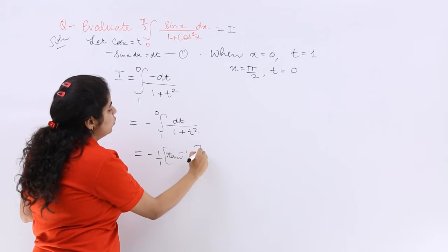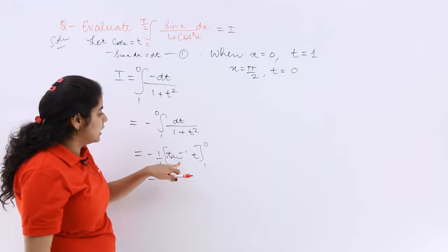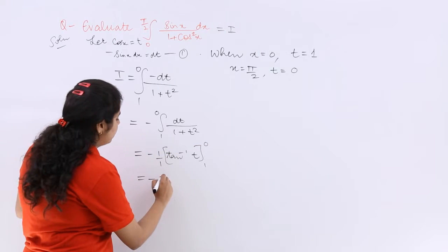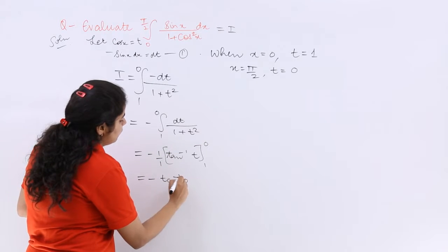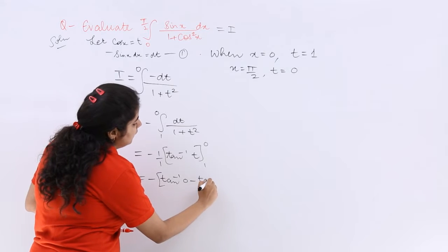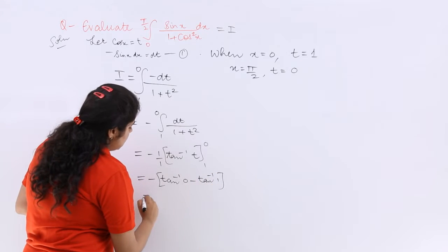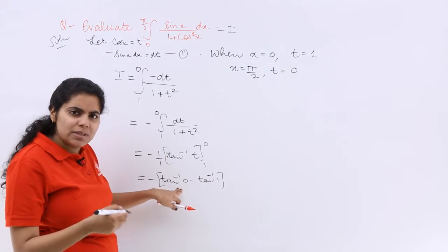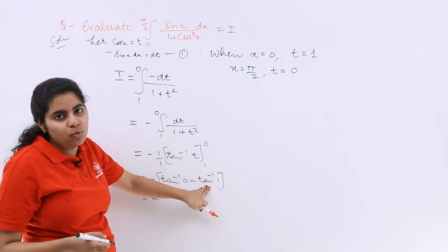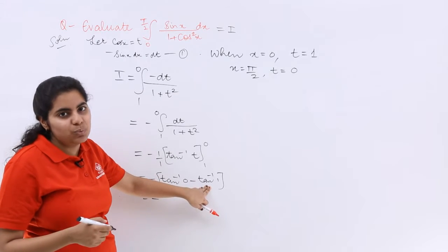Directly write minus here: tan⁻¹ 0 minus tan⁻¹ 1. So minus outside, tan⁻¹ 0 is 0, tan⁻¹ 1 is π/4 because tan 45° is 1.